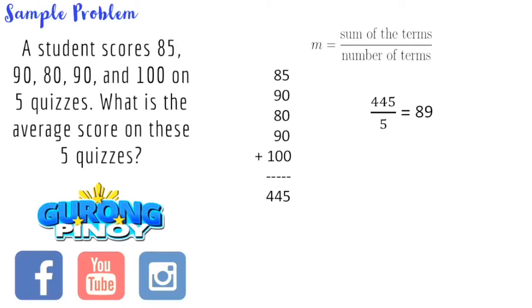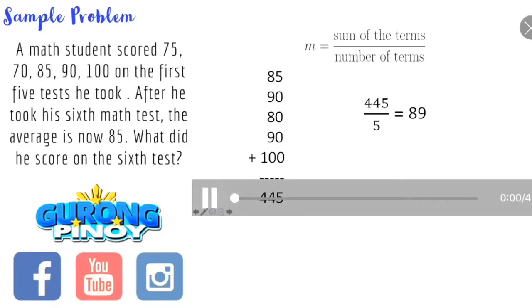That's the answer for our first sample problem. So again, we simply add up all the terms that we have, all the numbers, we get the sum, and we divide them by the number of terms. So that's 445 in this case divided by 5 since we are given 5 scores. So the correct answer would be 89. Now we proceed to our second sample problem.